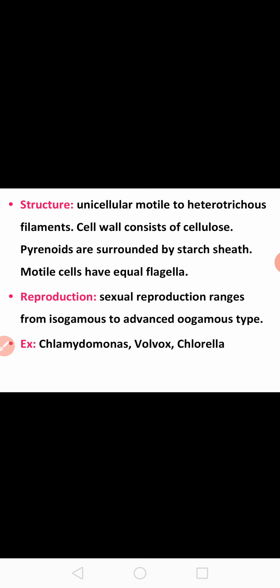The members may be unicellular or heterotrichous filamentous. Unicellular means the plant body is made up of a single cell. Heterotrichous means the plant body contains two types of branches: erect branches (straight) and prostrate branches (horizontal). So the structure of members may be unicellular or heterotrichous filamentous.